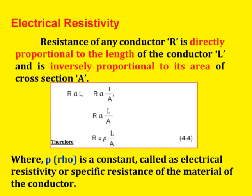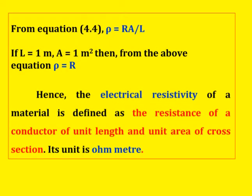Next, electrical resistivity. The resistance of any conductor is directly proportional to the length of the conductor L and inversely proportional to its area of cross section A. Here rho (ρ) is a constant, so R = ρL / A. This formula can be used for solved problems. The electrical resistivity of a material is defined as the resistance of a conductor of unit length and unit area of cross section. Its unit is ohm-meter.